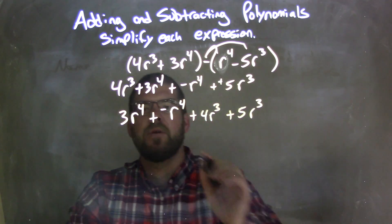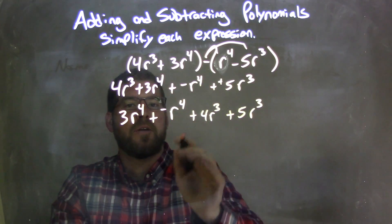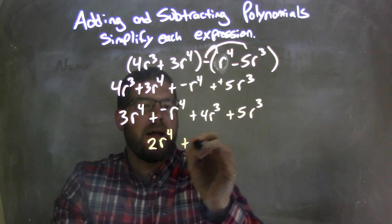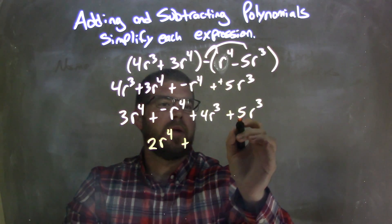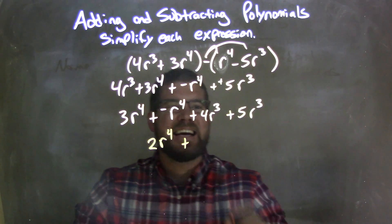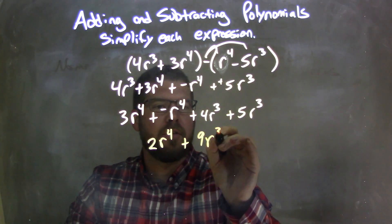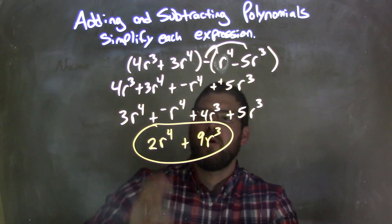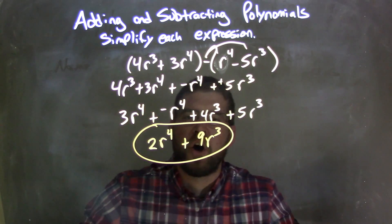Now let's combine our like terms. So of course, 3r⁴ plus a negative r⁴ is 2r⁴. Now we add here: 4r³ + 5r³ is 9r³. And there we have it. We have our final answer, it's simplified: 2r⁴ + 9r³.